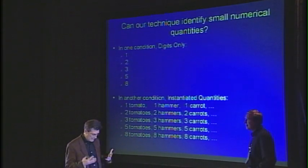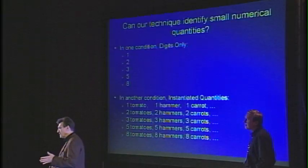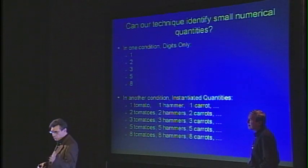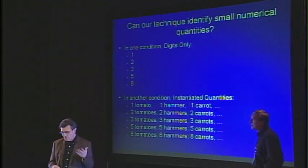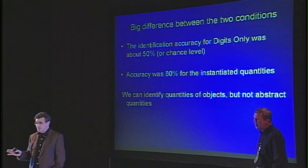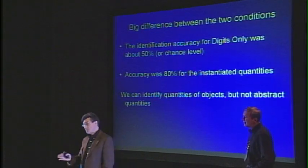Another kind of idea we wanted to look at was quantity. Mathematics, arithmetic, and quantification are important concepts in our society. We wanted to know whether we could find out whether a person's thinking three or five or eight. We asked people to think about one tomato, one hammer, one carrot, or three tomatoes, three hammers, and three carrots, to see if we could identify the representation of quantity. We couldn't really tell whether a person is thinking one, three, five, or eight — it was near chance level. But we could tell with very good accuracy whether they were thinking one tomato, three tomatoes, five tomatoes, or eight tomatoes.